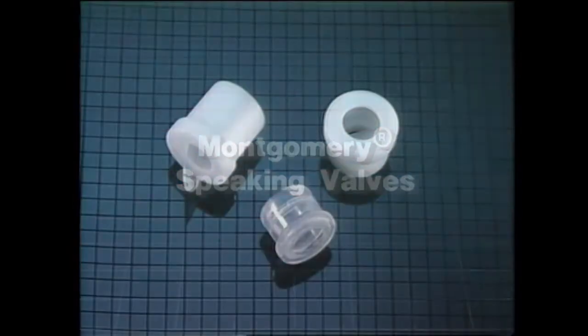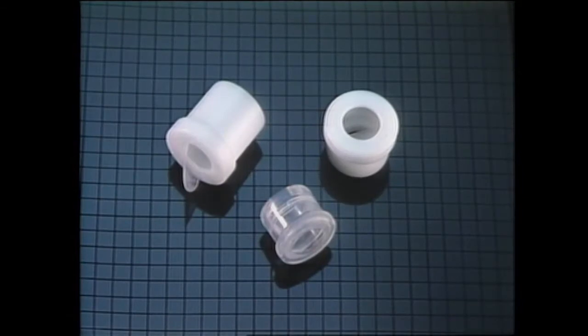The Montgomery speaking valves are designed to allow tracheotomy patients to vocalize without the need for finger occlusion. All valves provide one-way airflow using a thin silicone-hinged diaphragm which opens on inspiration and closes on expiration. All Montgomery speaking valves are noiseless, easily cleaned, durable, and offer a unique cough release feature, eliminating valve blowout following a forceful cough or excessive airway pressure.